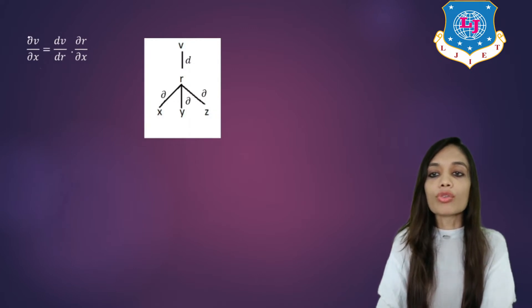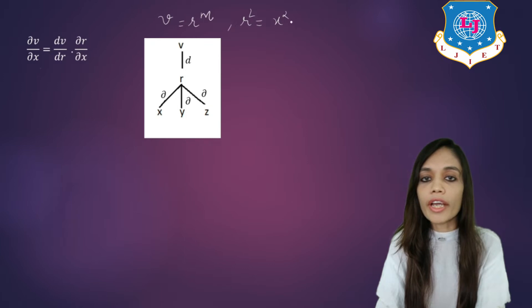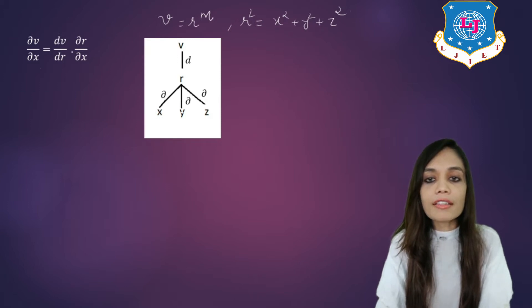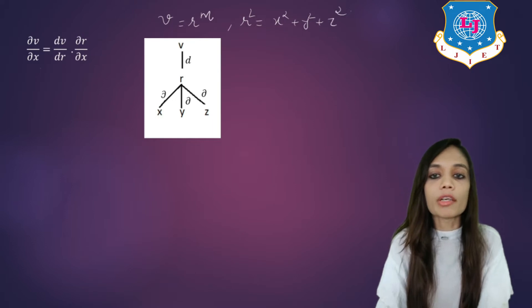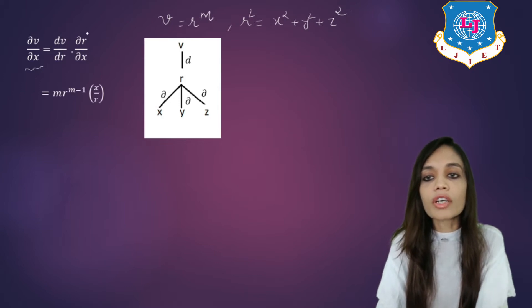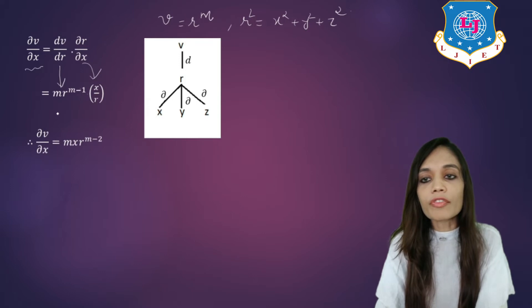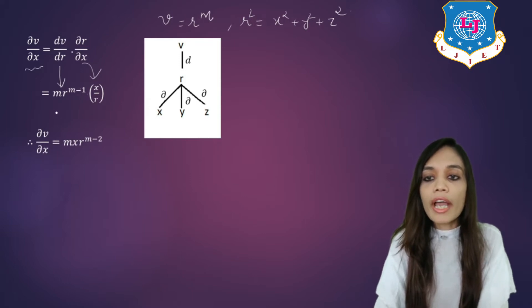Now let us find the value of del v by del x. We are given v is equal to r raise to m, and r is a function of x, y and z. So the formula gives del v by del x equal to dv by dr into del r by del x. Here dv by dr is equal to m into r raise to m minus 1, and del r by del x is x by r. On simplification, del v by del x is equal to m into x into r raise to m minus 2.